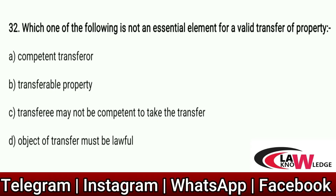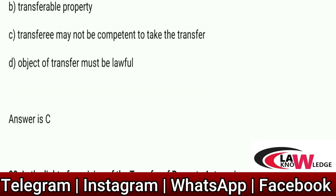Q32: Which one of the following is not an essential element for a valid transfer of property? Option A: Competent transferor. Option B: Transferable property. Option C: Transferee may not be competent to take the transfer. Option D: Object of the transfer must be lawful. Correct answer is C — the transferee may not be competent to take the transfer.